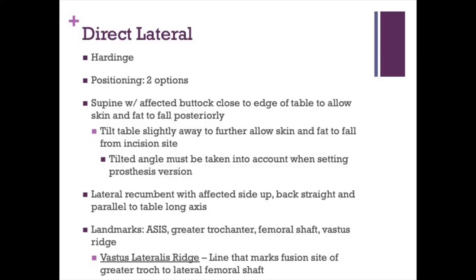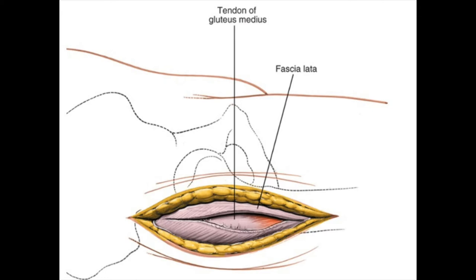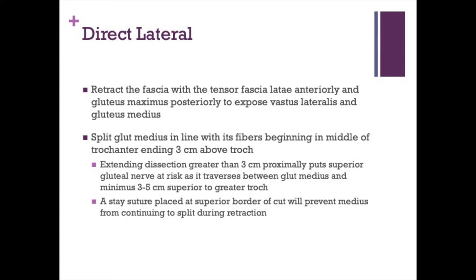The direct lateral or Hardinge approach is the more commonly used anterolateral approach in the United States today. The patient is in lateral recumbent position, using many of the same principles as the Watson-Jones approach. The inner-nervous plane here is between the gluteus medius and the vastus lateralis — involving both the superior gluteal and femoral nerves, so there is a true inner-nervous plane. The fascia lata is split longitudinally, exposing the tendon of the gluteus medius as it inserts on the greater trochanter. The gluteus medius is split in line with its fibers beginning in the middle of the trochanter, extending three centimeters above it. The anterior third of the gluteus medius is released off the trochanter and tagged for later closure — closure is crucial to outcome.